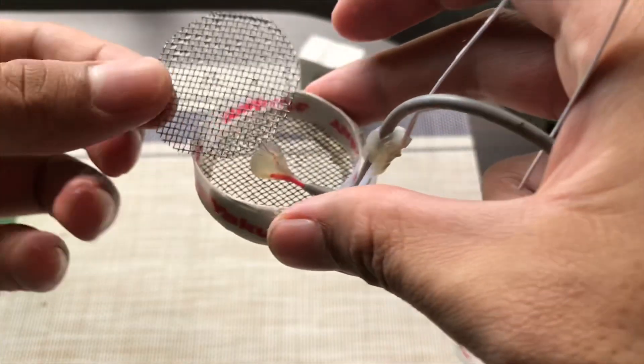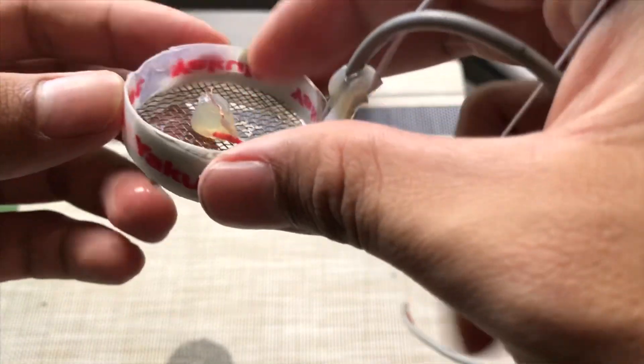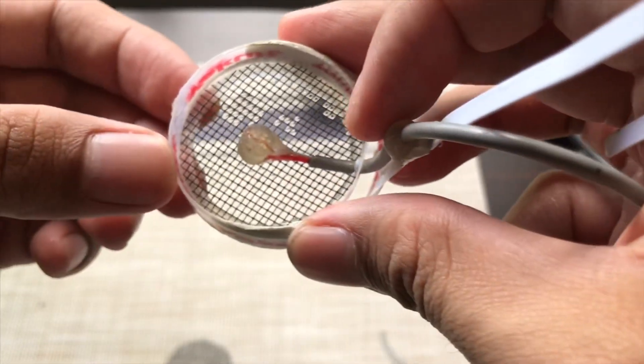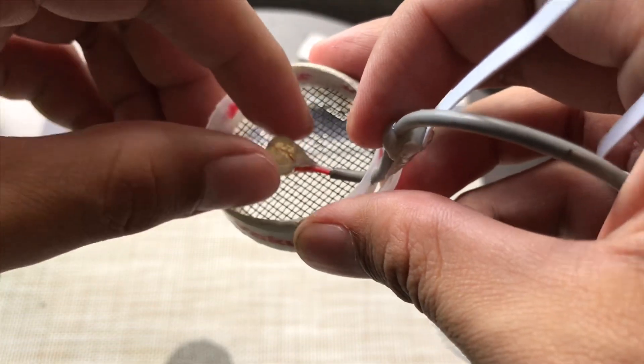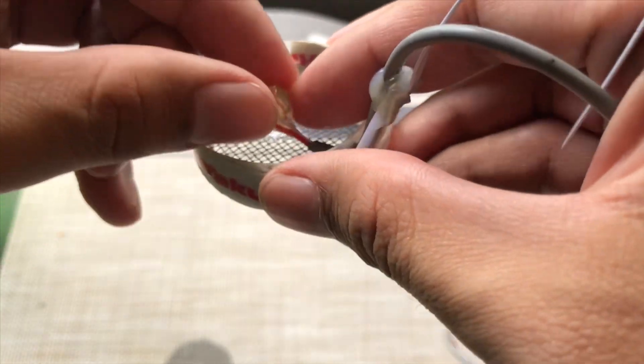Now on here there should be a decent separation between the negative and positive mesh. That's for the current to pass and that's for electrolysis to happen.